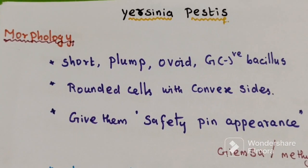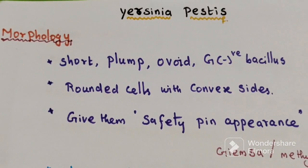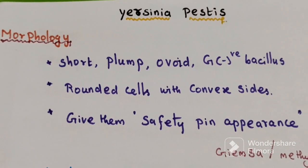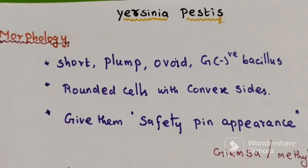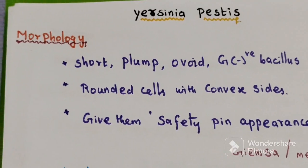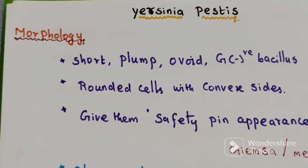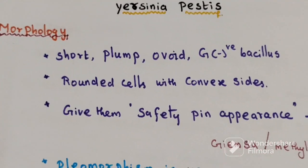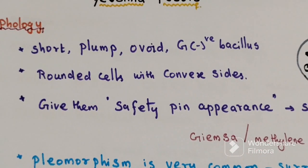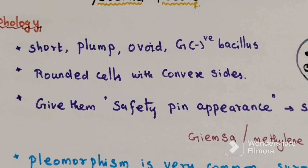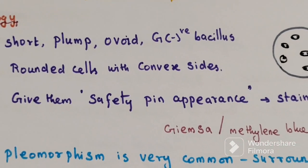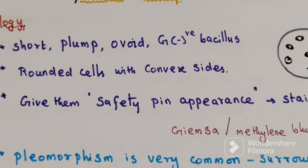Today's topic of discussion is Yersinia pestis. Morphology: it is short, plump, ovoid, gram-negative bacilli.